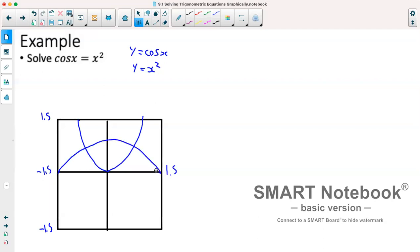So now we'll find where our graphs intersect here and here. And that's in this case going to give us negative 0.824 for our x value and positive 0.824 for our x value. So those would be our two solutions.